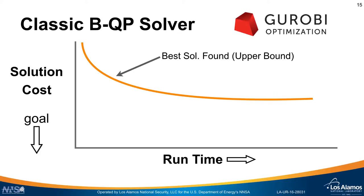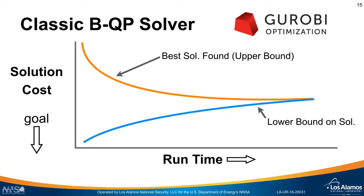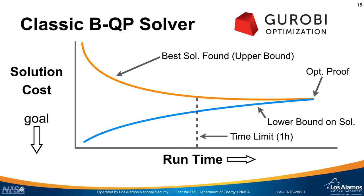As the algorithm runs, there's a best solution which is constantly decreasing as we push the cost lower. These algorithms also compute a lower bound, which bounds the cheapest possible solution you could ever have — and this is always increasing over time. Eventually these two values will converge, giving you an optimality proof that the best solution found is in fact the global optimum. The problem is that this runtime could be exponentially long. So we set a time limit, for example one hour, stop before the two lines meet, and then measure the optimality gap — giving us a measure of how far we are from the best possible solution.